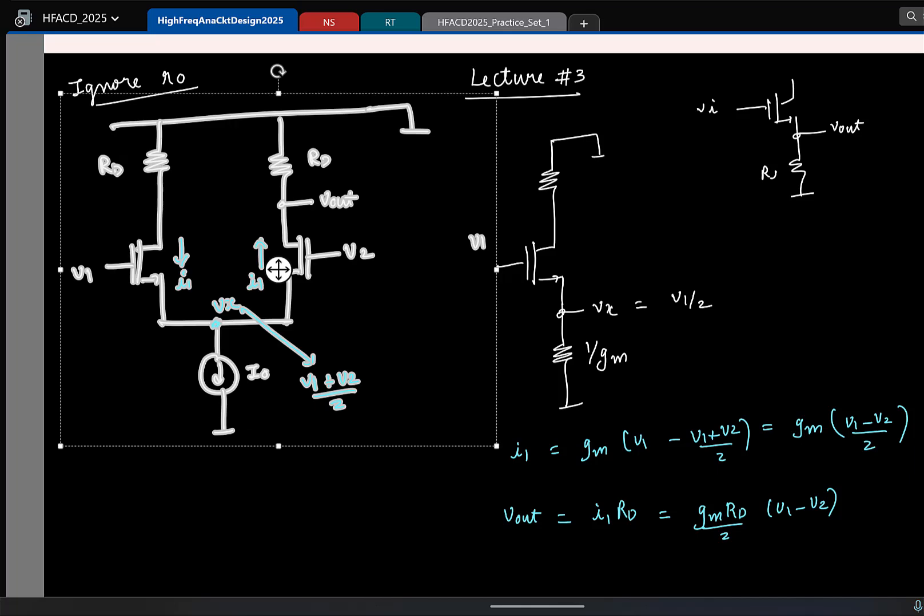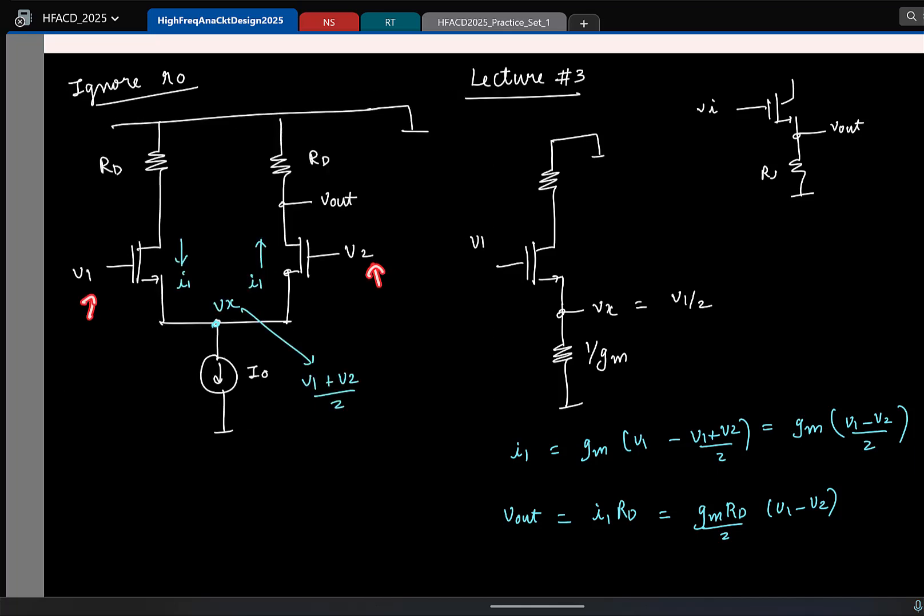So this current is also I1, so then what is small signal Vout now in terms of I1? Yeah, again small signal supply is short, so Vout is I1 times Rd, so you plug in the expressions, you get gm Rd by 2 times V1 minus V2, this is okay, great. So this is what happens in the circuit if I apply two different inputs V1 and V2, this gives you full picture of what each voltage is and stuff.